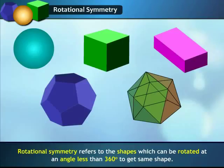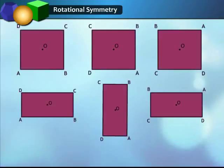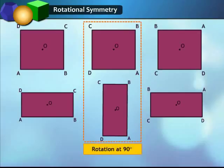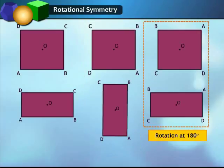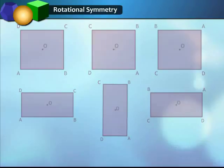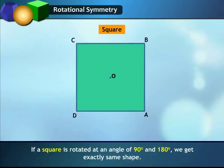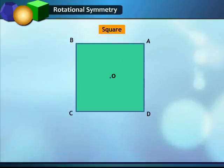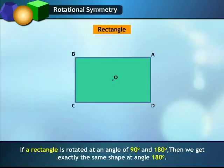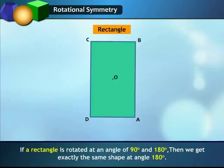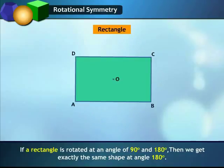Let us take a look at the following shapes when these are rotated at an angle of 90 degrees and 180 degrees. Shape 1: if a square is rotated at an angle of 90 degrees or 180 degrees, we get exactly the same shape. Shape 2: if a rectangle is rotated at an angle of 90 degrees and 180 degrees, then we get exactly the same shape at 180 degrees.